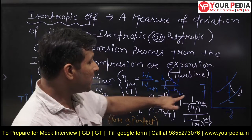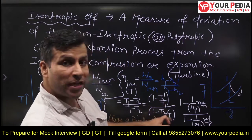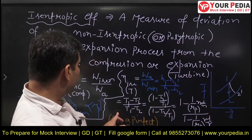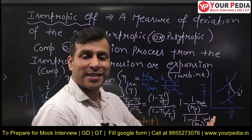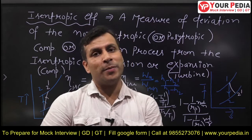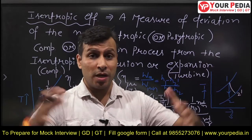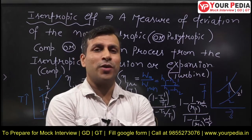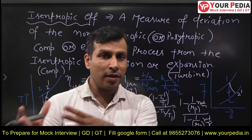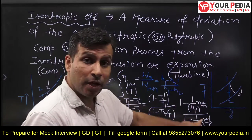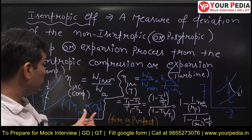Now, T1/T2-dash can be written as Rp to the power (n−1)/n, and T2/T1 is 1/Rp to the power (γ−1)/γ. This follows from the simple isentropic relationship T2/T1 = (P2/P1)^((γ−1)/γ) = (V1/V2)^(γ−1), which we use for an isentropic process to establish the relationship between temperature, pressure, and volume. From this expression we can clearly say that isentropic efficiency of a turbine or compressor is a function of pressure ratio.